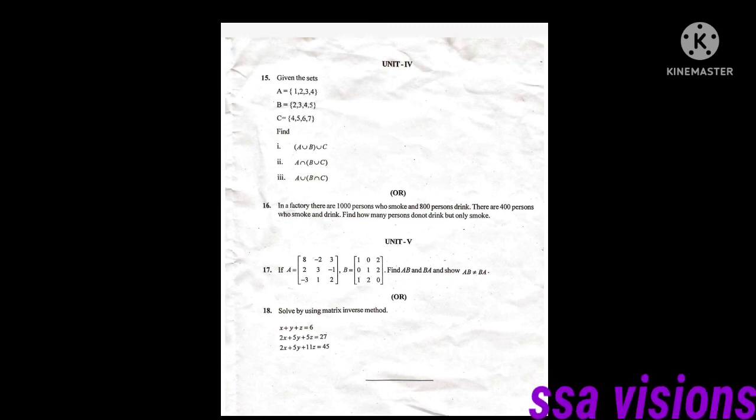Next we have to go to unit 5, the matrix. Question 16: Find AB and BA, show AB is not equal to BA. Question 17: Solve by matrix inverse method.